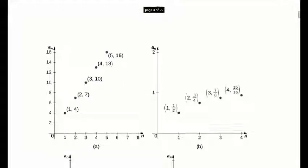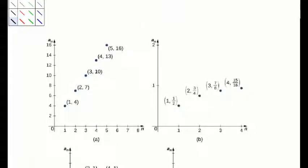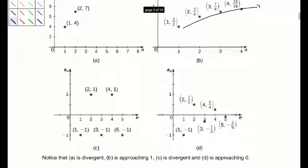Looking at some graphical examples where n values are on the x-axis and a sub n values are on the y-axis: graph a is divergent — it's just going off to infinity. Graph b appears to approach 1 — it's getting closer and closer to 1 and leveling off. Graph c is totally divergent, bouncing back and forth between negative 1 and 1. Graph d is approaching 0 — the values go positive and negative but bounce closer and closer to 0.